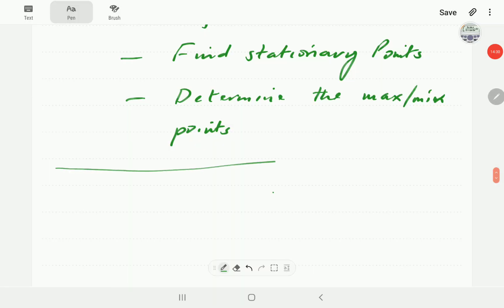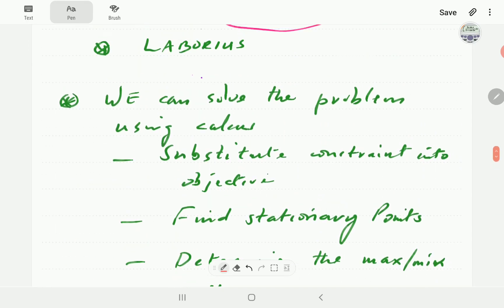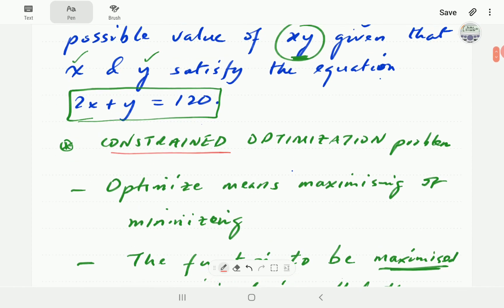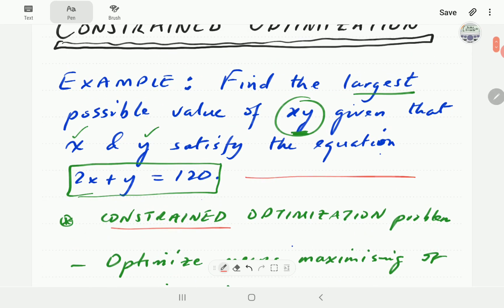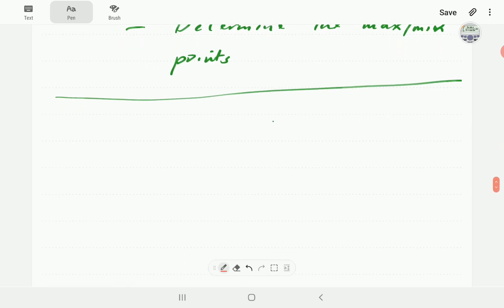Before we end this video, I'm just going to note that the standard shortened way this problem is going to be expressed in a very compact form - the statement of the problem is going to be as follows. The statement of the problem is just going to be: maximize F equals xy subject to 2x plus y equals 120. That is typically how the problem is going to be stated.